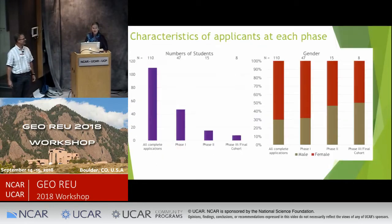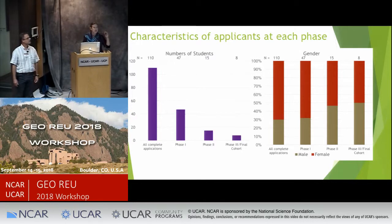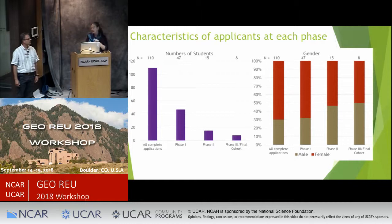This is pretty standard, so we'll move on to results. This is exactly what we shared in our report to NSF: the information about our phases and how we did it, our rubric and how we used it, and the results of how applicant characteristics changed phase by phase.